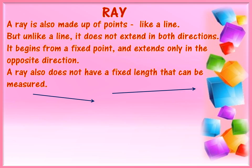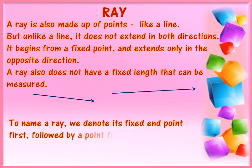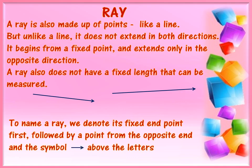Like a line, a ray is also named by using two letters from the opposite ends. But while naming a ray, we must denote its fixed end point first, followed by a point from the opposite end and the symbol above the letters. In the first example, if we name the fixed end as point M and the opposite end as point N, then the ray will be called ray MN and not ray NM. Similarly, in the second example, if the fixed end is point E and the opposite end is point F, then the ray will be called ray EF and not ray FE.